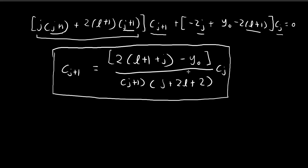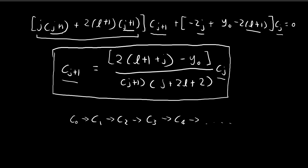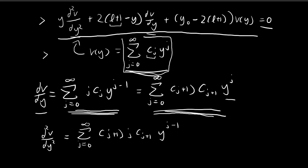The next term c_{j+1} is defined in terms of the previous term c_j. If we set an initial value c_0, we can use this recurrence formula to find c_1, then substitute c_1 back to get c_2, then c_2 to get c_3, and so on indefinitely. As long as the sequence of constants satisfies this recursive relationship, they can be used to construct v(y), and that v(y) will be a solution satisfying the differential equation.